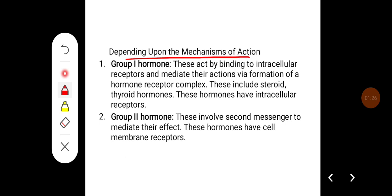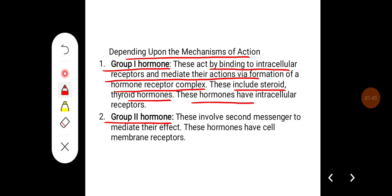Depending on the mechanism of their reaction, hormones can be divided into Group 1 and Group 2 hormones. Group 1 hormones act by binding to intracellular receptors and mediate their actions via formation of a hormone-receptor complex. These include steroid and thyroid hormones, which have intracellular receptors. Group 2 hormones involve second messengers to mediate their effect and have cell membrane receptors.